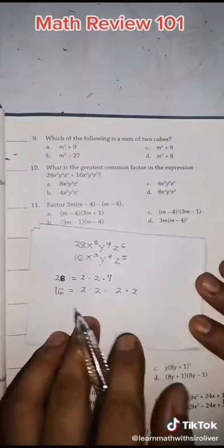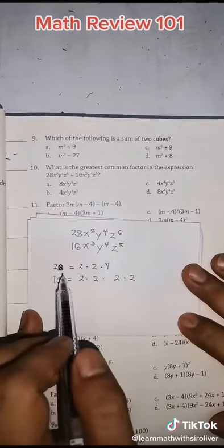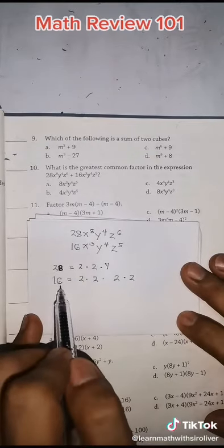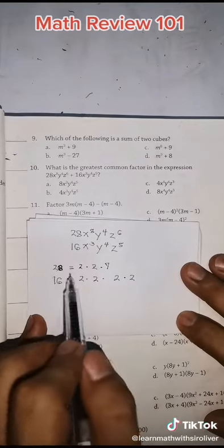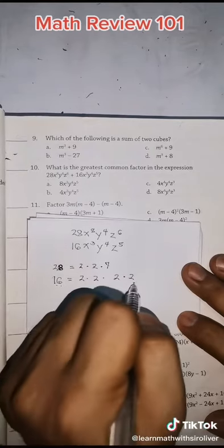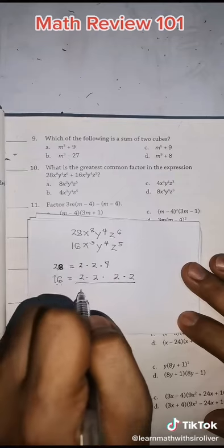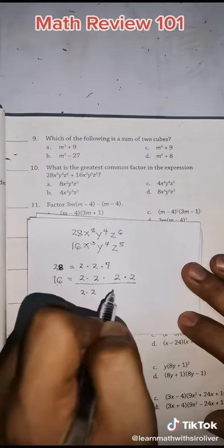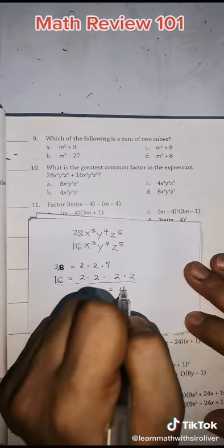So let us get the greatest common factor of the given coefficients, 28 and 16. That is 2 times 2 times 7 for 28, and for 16, 2 times 2 times 2 times 2. So therefore, bring down lang yung may magkatulad. So the GCF is 4.